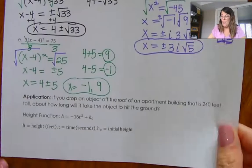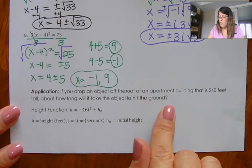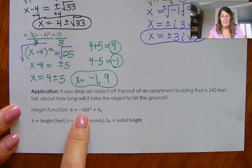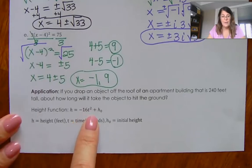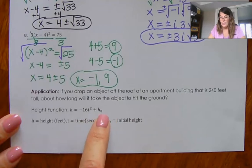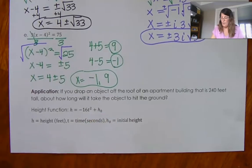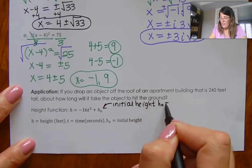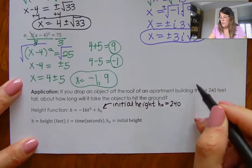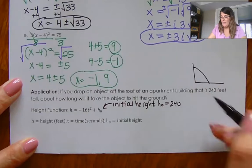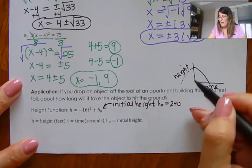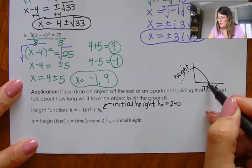Now for a word problem application: if I'm dropping an object off an apartment building at 240 feet in the air, this is the height function. The negative 16 is the effect of gravity pulling it down. Typically we'd see a middle term with t representing initial velocity, but we're just dropping it — not throwing it up. The last term is the initial height. If I think about this as a parabola, it's just going down over time. Negative time doesn't exist, so this is just a piece of the parabola going forward.